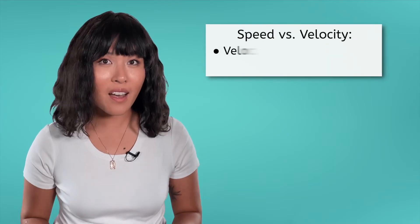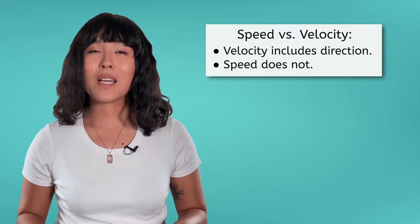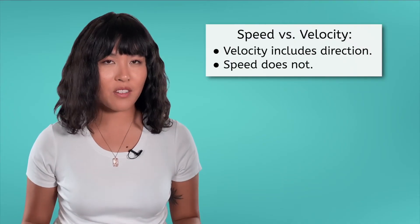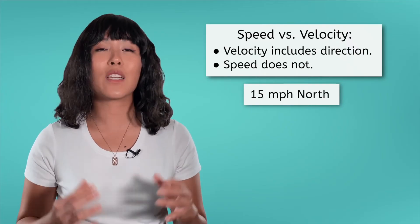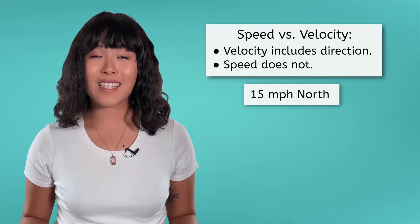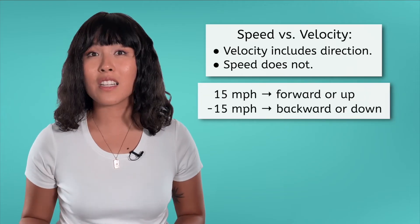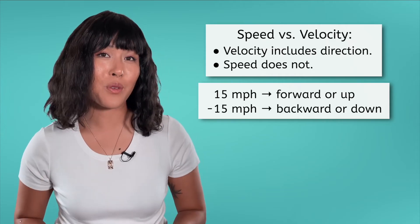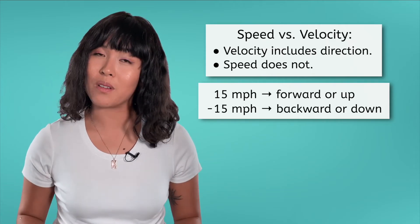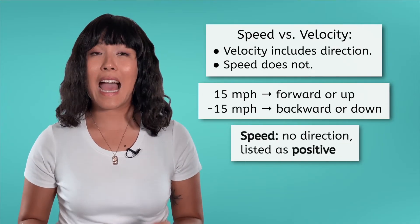One other difference you may notice with speed and velocity is that velocity always includes a direction, while speed does not. Sometimes this direction will be obvious, such as 15 miles per hour north. Other times you may not see a direction indicated with words — in this case, the sign of the value can be used to infer direction. Positive velocity values are assumed to be in the forward or up direction, while negative values indicate motion that is backwards or down. Because speed does not include direction, these values are always listed as positive.